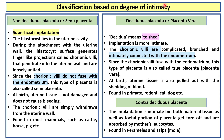Based on degree of intimacy, there are three types of placenta: non-deciduous placenta, deciduous placenta, and contradeciduous placenta. In non-deciduous placenta, the implantation is superficial — meaning near the surface. The blastocyst lies in the uterine cavity, and during attachment with the uterine wall, the blastocyst surface generates finger-like projections called chorionic villi that penetrate into the uterine wall and are loosely united. Since the chorionic villi do not fuse with the endometrium — the innermost wall of the uterus — this type of placenta is also called semi-placenta.